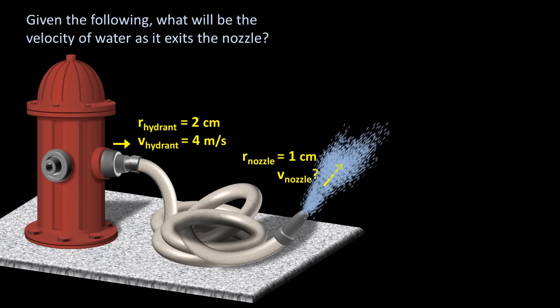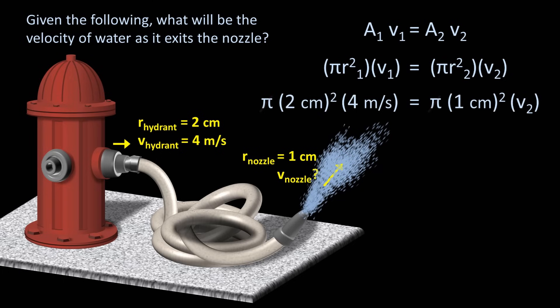Given all of that, what will be the velocity of water as it exits the nozzle? Sounds like a continuity equation problem, so we'll start with area 1 times velocity 1 equals area 2 times velocity 2. The areas are pi r squared. Substitute in our known values and pi cancels. This leaves us with a velocity of 16 meters per second.